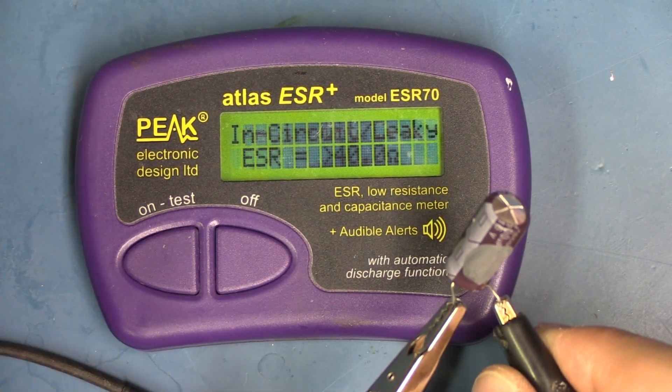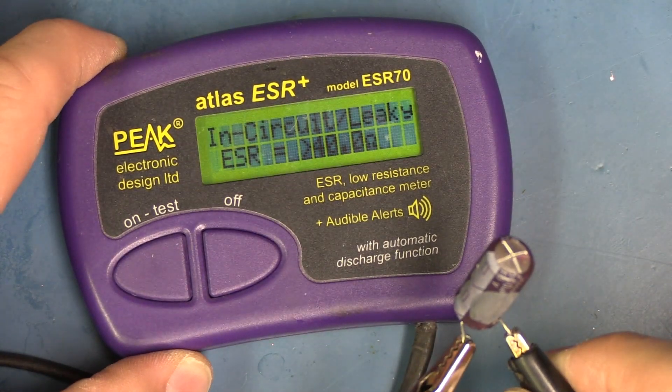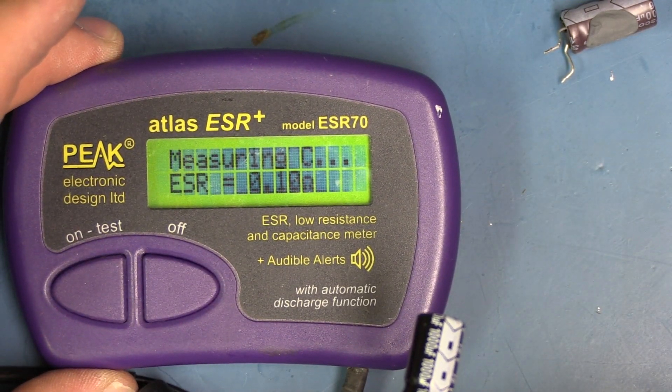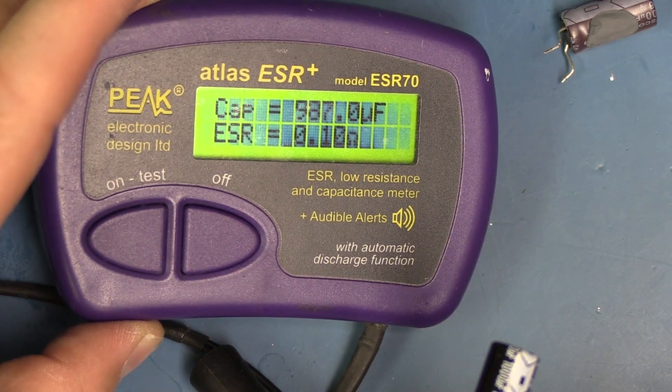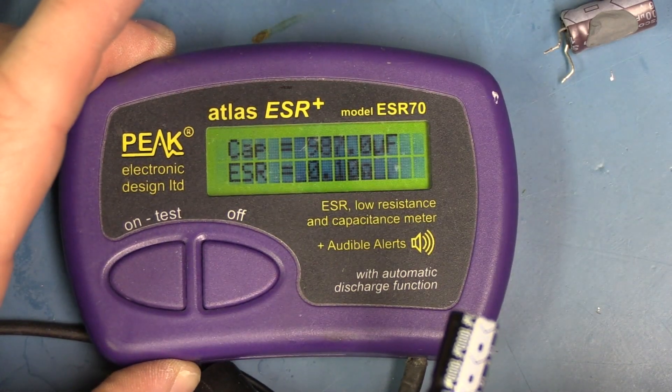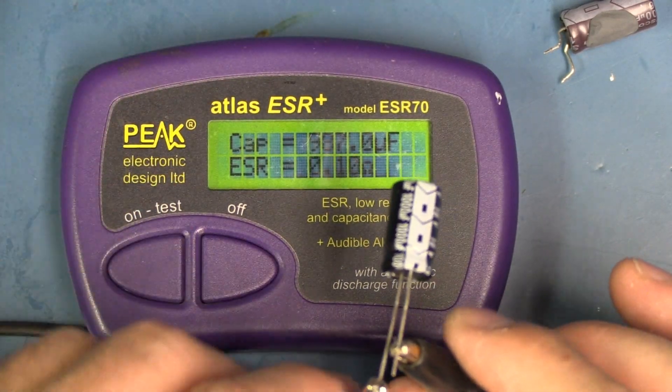This is a 1000 microfarad capacitor and it is reading in-circuit/leaky. This is our replacement capacitor, and when I connect it we get 987—that's kind of hard to see on screen, but we have 987 microfarad and it's saying 0.1 ohm for the ESR rating. So this is a good capacitor, and that's what we're going to install to repair our board.